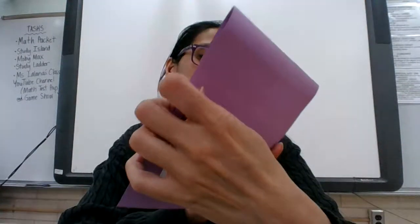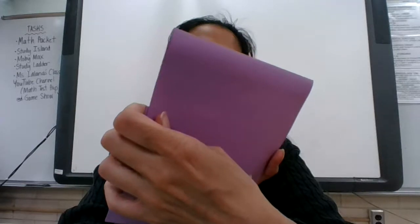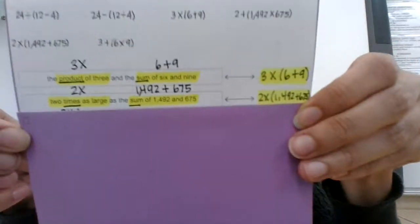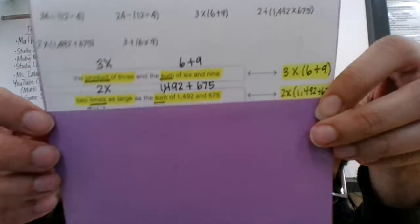The next one says two times as large as the sum of 1,492 and 675. What I did is I highlighted some key phrases and underlined the key words.